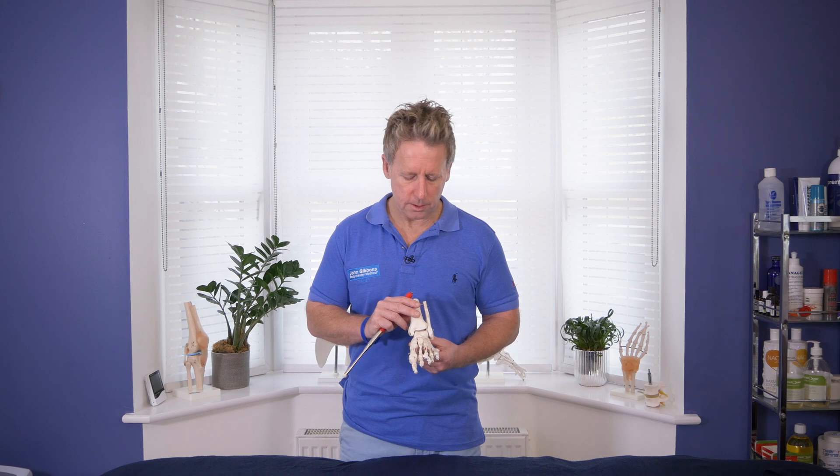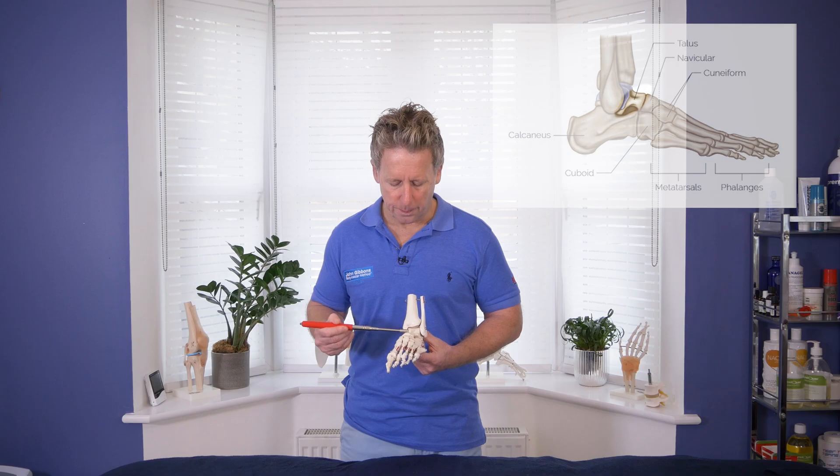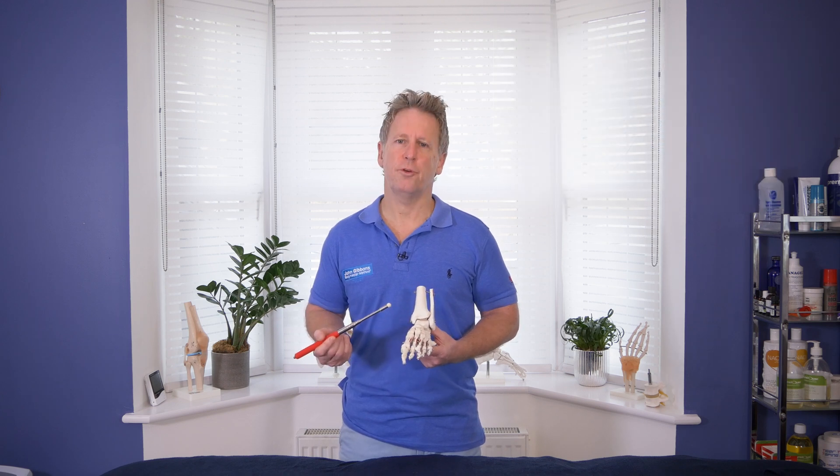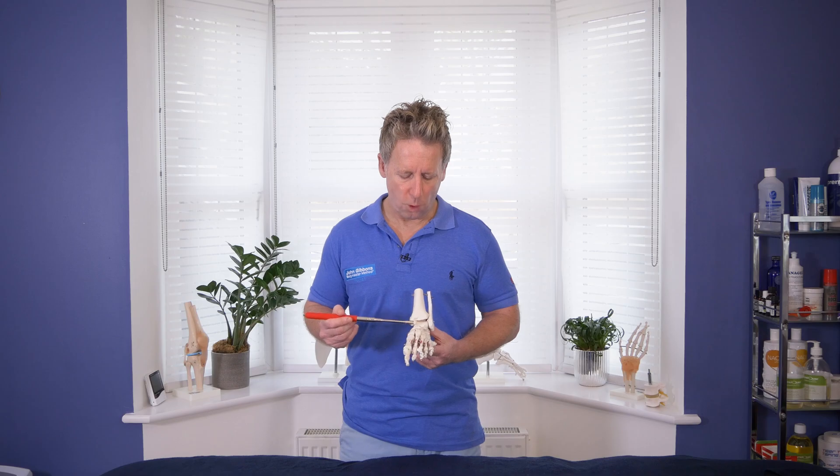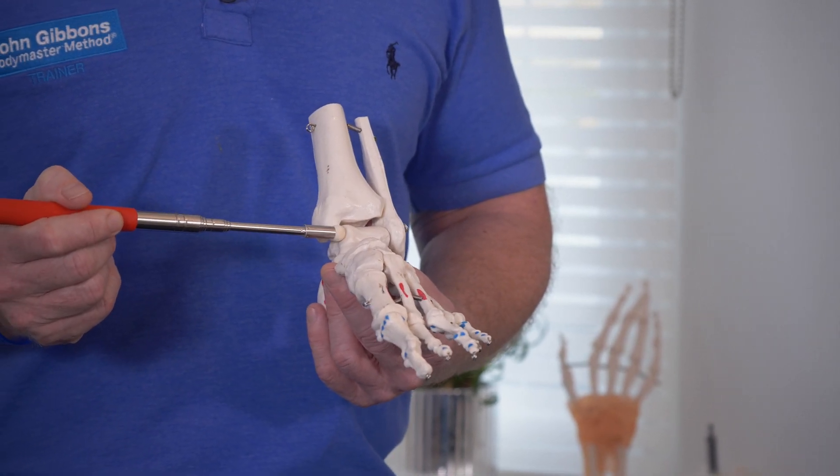The second largest tarsal bone is known as the talus, and superiorly it articulates with the tibia to form the ankle joint with the fibula on its lateral side.